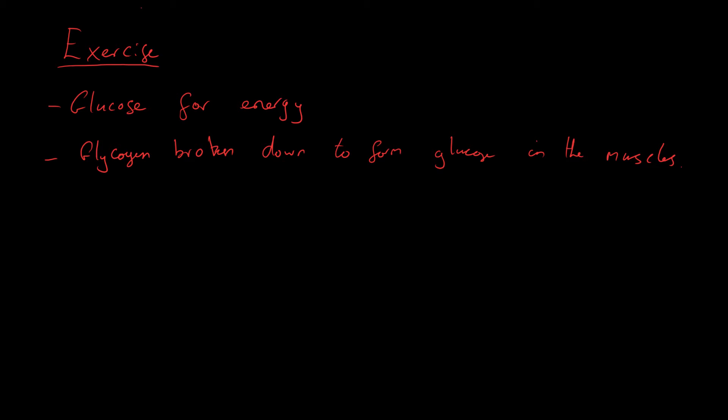As muscles need more energy, they use more glucose and break down more glycogen. From the equation for respiration — glucose plus oxygen — you also need more oxygen: a greater oxygen supply to the muscles. If you run out of oxygen you'll start respiring anaerobically, but aerobic respiration is much better, so we do that for as long as possible.